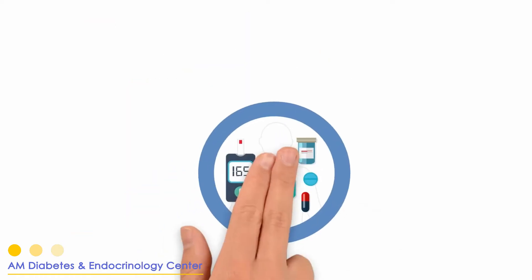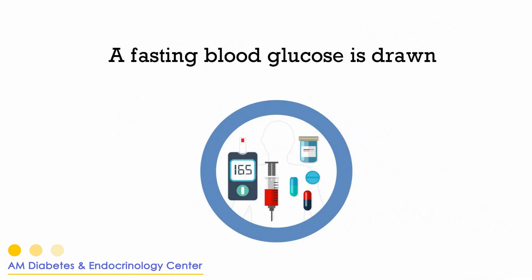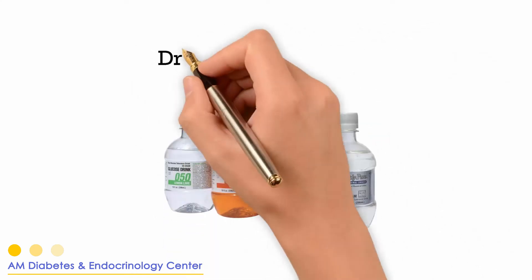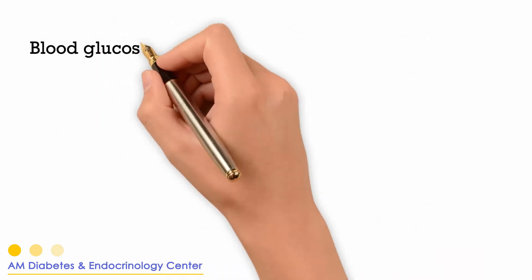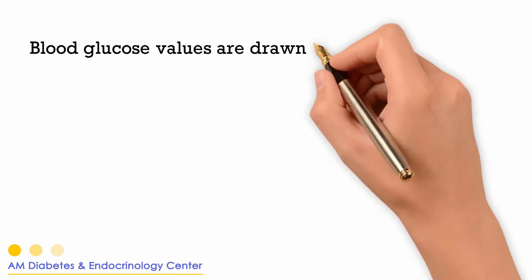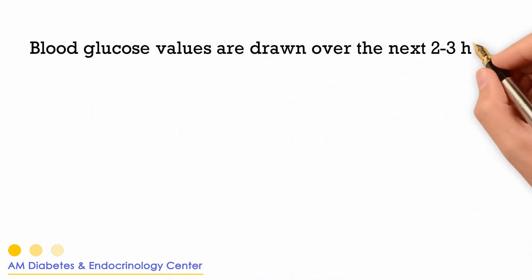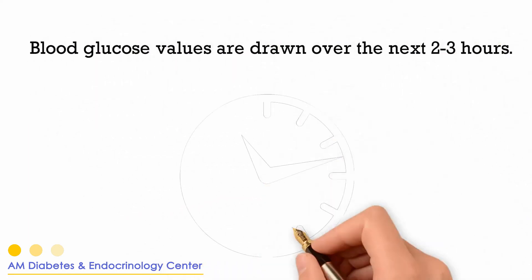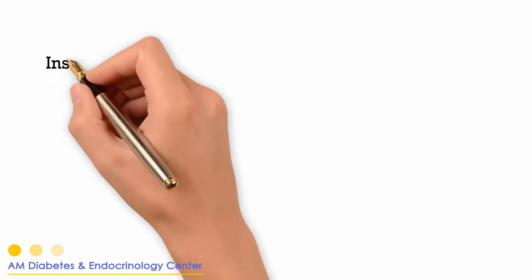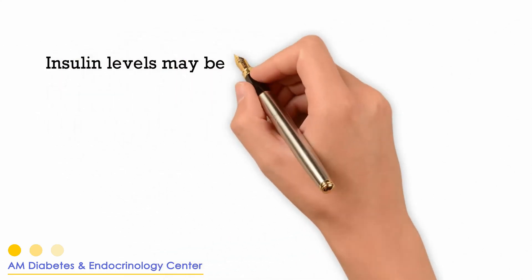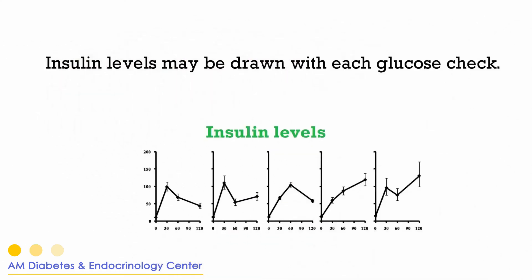2. A fasting blood glucose is drawn. 3. The patient drinks a glucose drink. 4. Blood glucose values are drawn over the next 2 to 3 hours. 5. Insulin levels may be drawn with each glucose check.